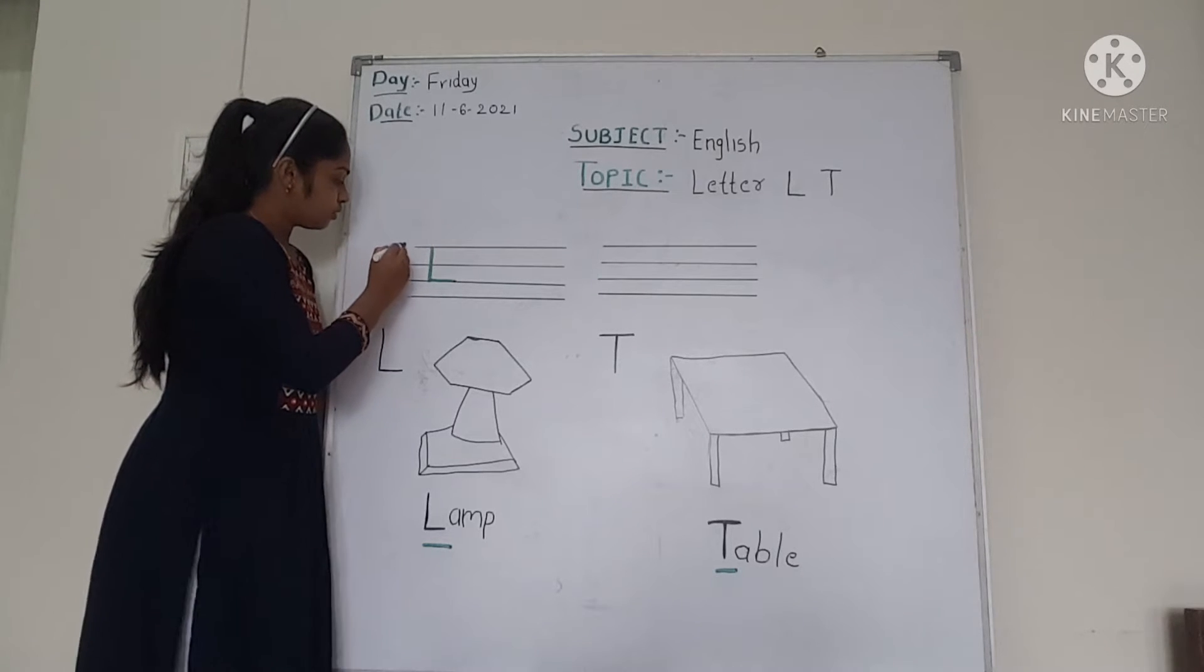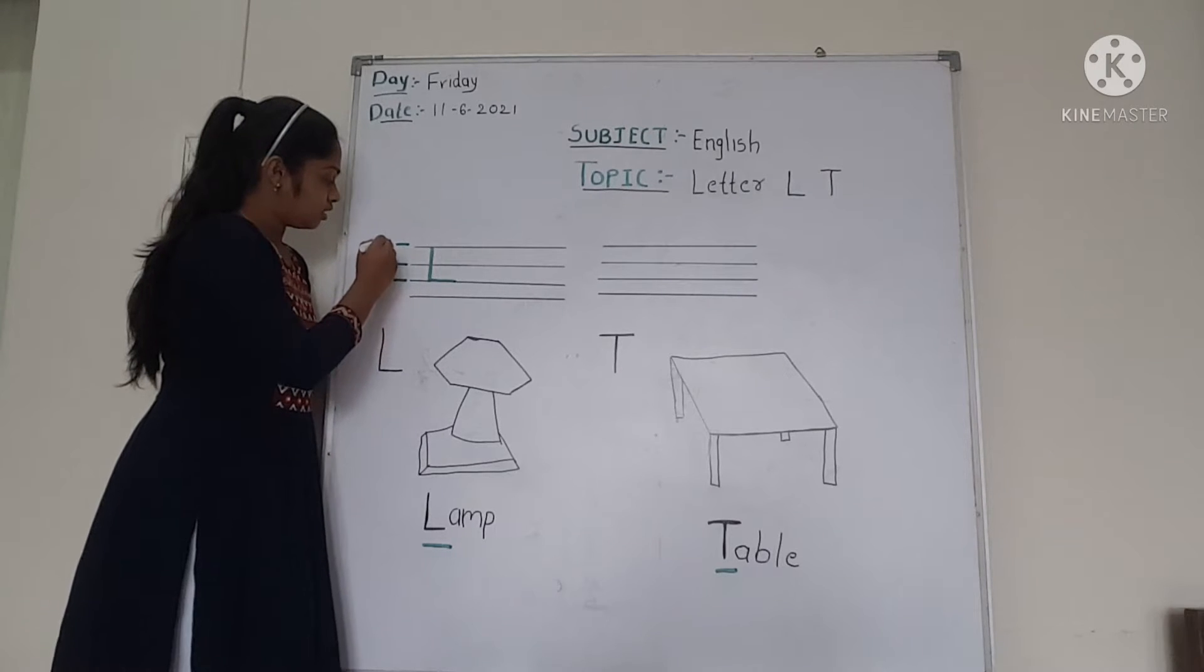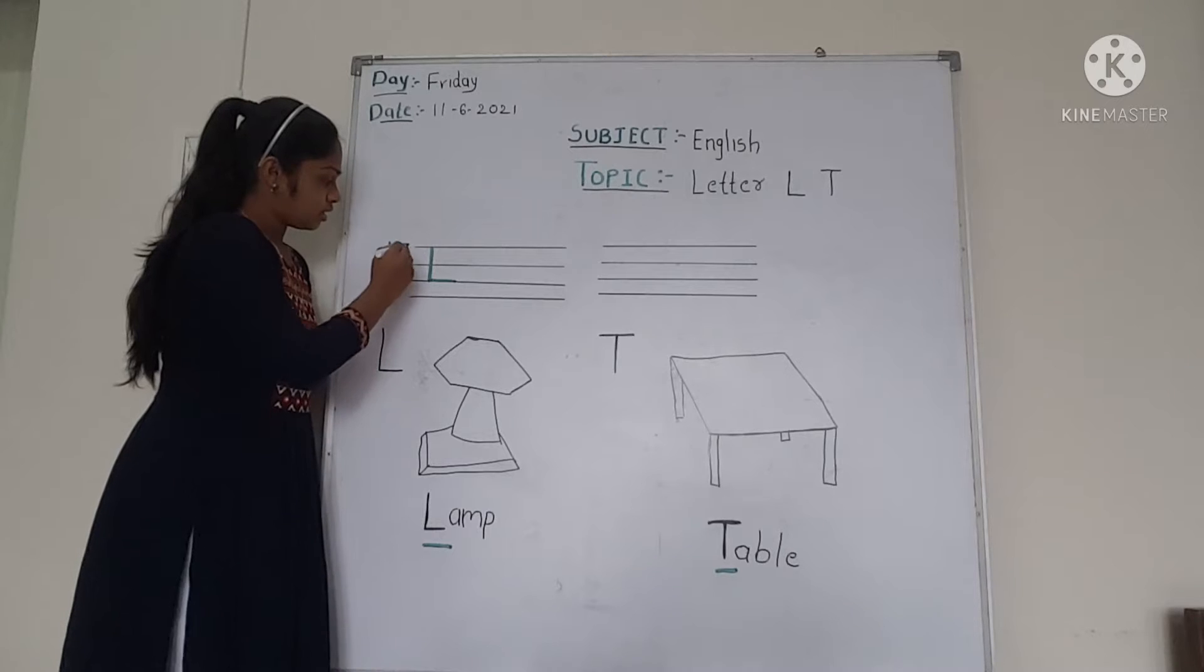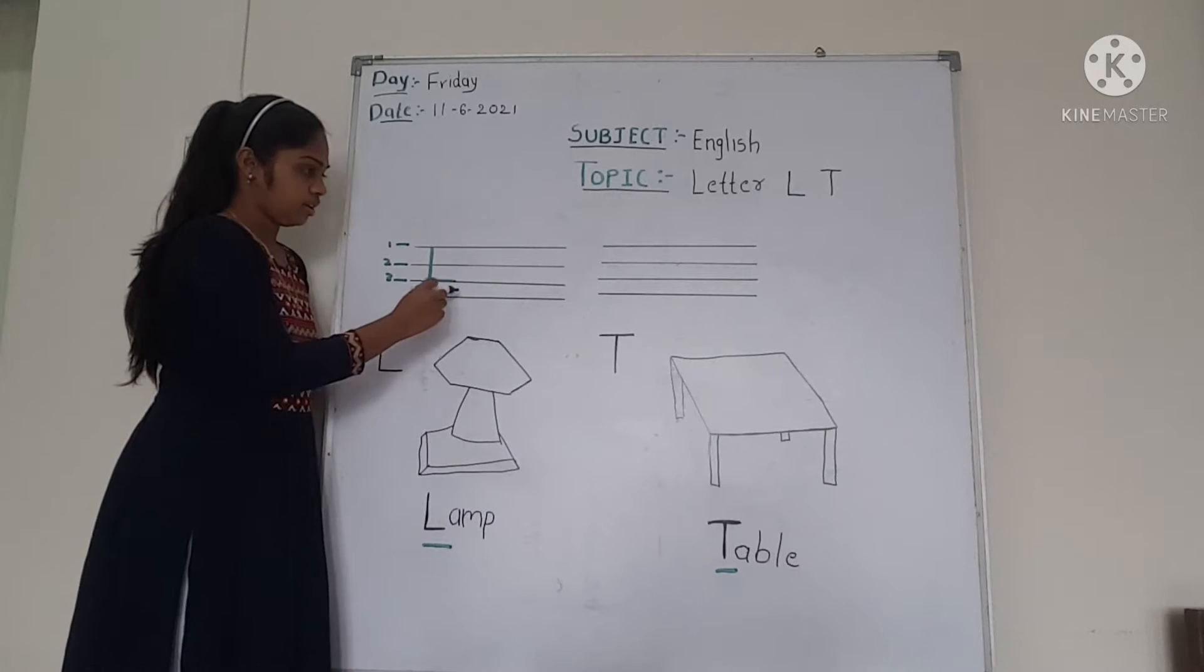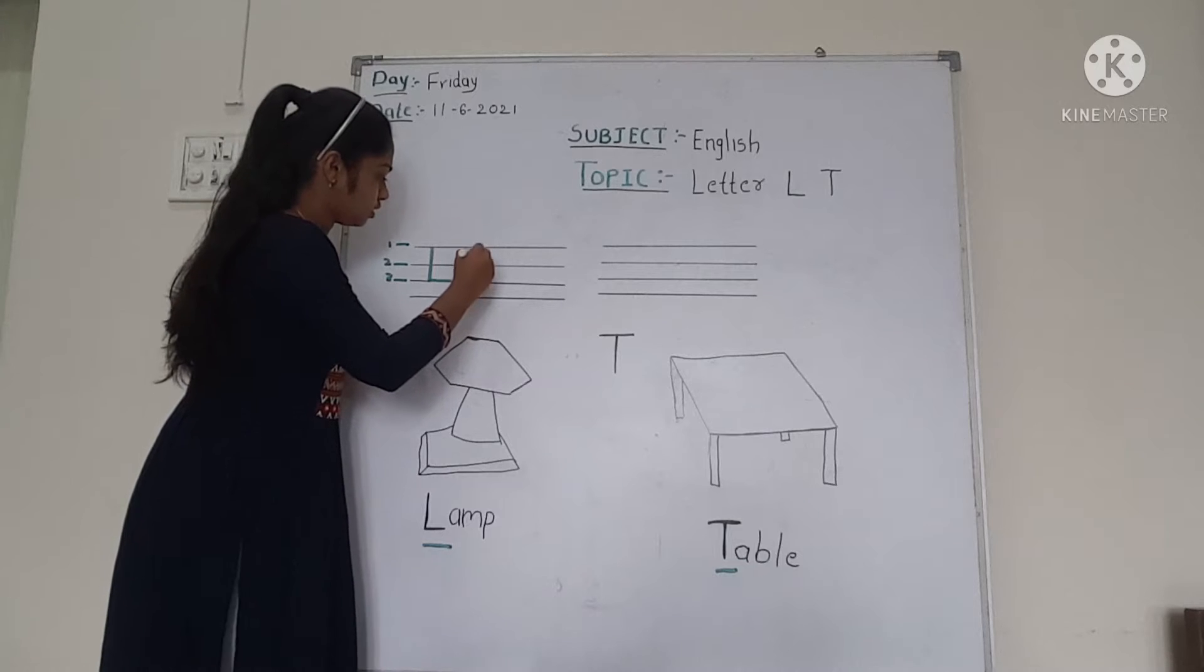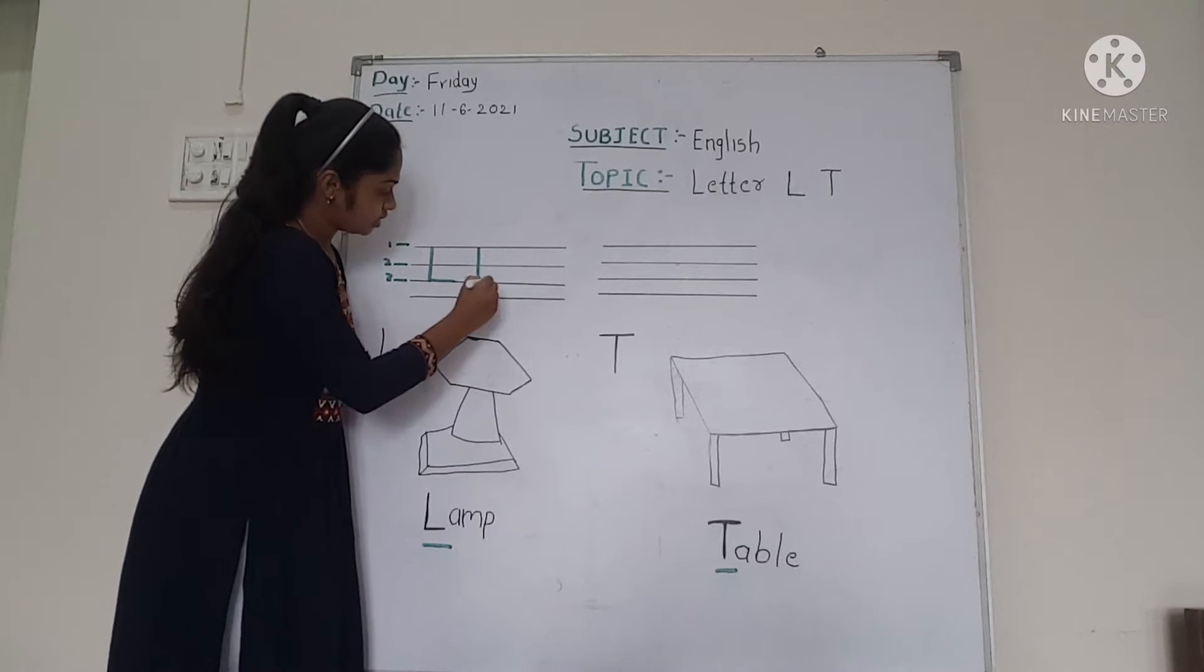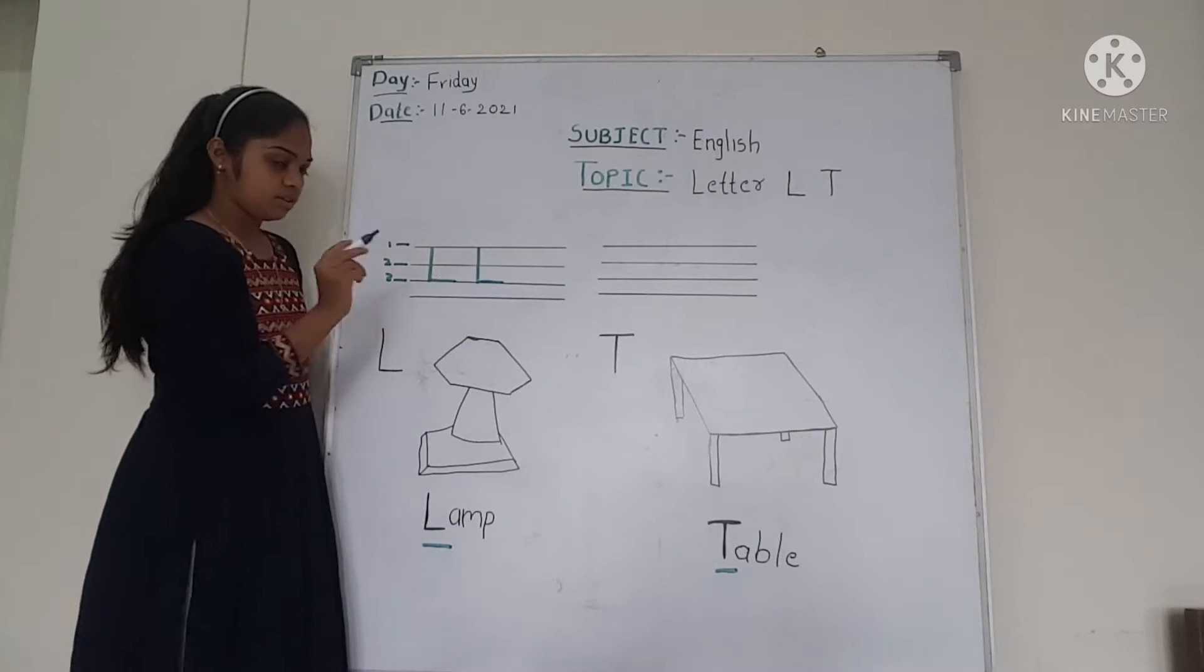Draw letter L. First, second and third. One, two and three. Three lines and draw one line. Standing line and sleeping line.